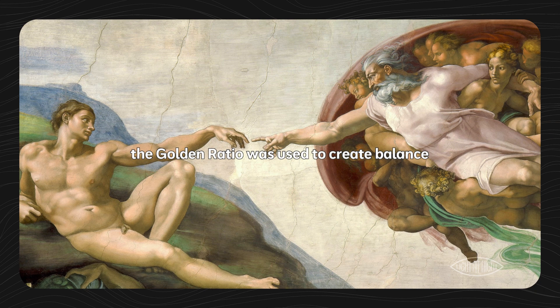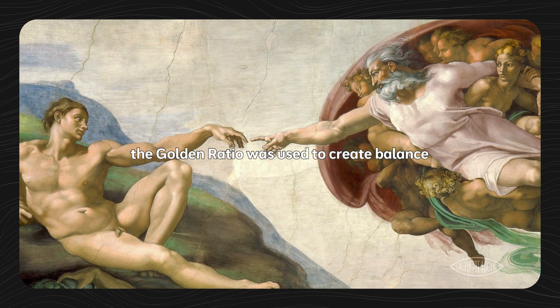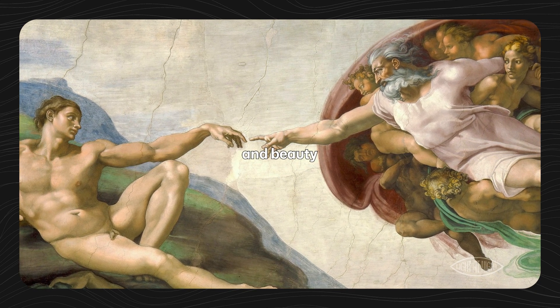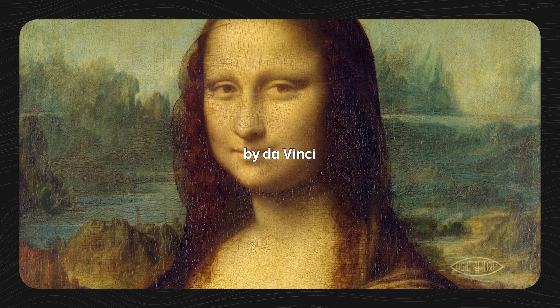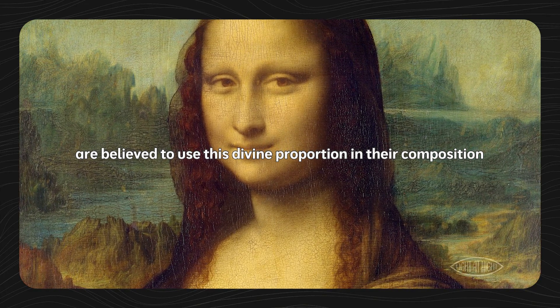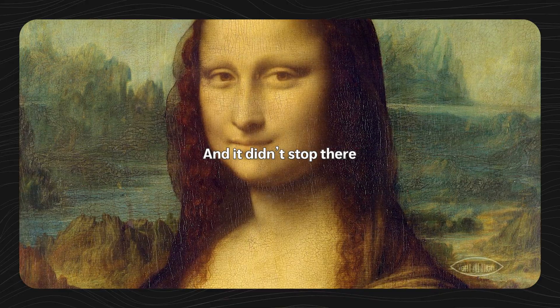In Renaissance art, the golden ratio was used to create balance, harmony, and beauty. Famous works such as The Last Supper and The Mona Lisa by da Vinci are believed to use this divine proportion in their composition. And it didn't stop there.